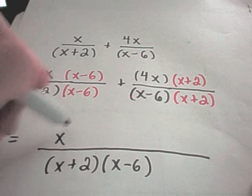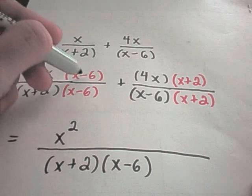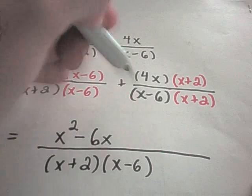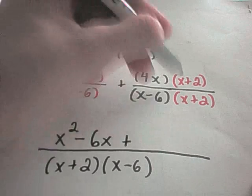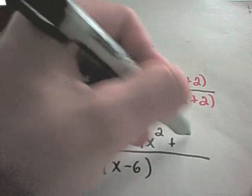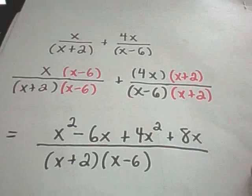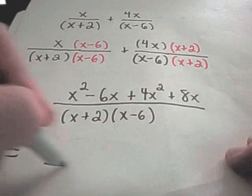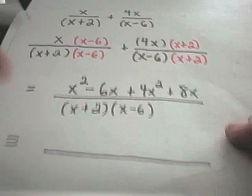So I'm going to add them together. I will have common denominators of x plus 2 times x minus 6. And I'm not even going to multiply that out. The top part I will, however, multiply out. So I'll have to do some distributing. So x times x is x squared. x times negative 6 is negative 6x. And then I've got a positive 4x times x, which is 4x squared. A 4x times a positive 2, that's positive 8x.